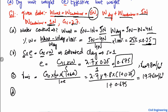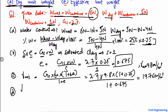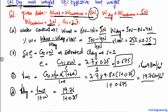The fourth unknown is the dry unit weight. The dry unit weight can be found very easily: it equals the moisture unit weight divided by (1 plus water content). So 19.76 divided by (1 plus 0.25) gives a dry unit weight of 15.8 kN/m³.